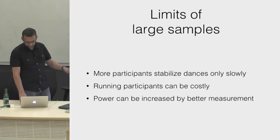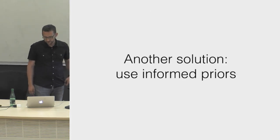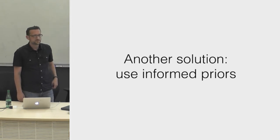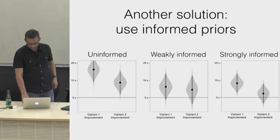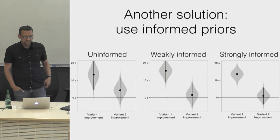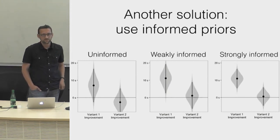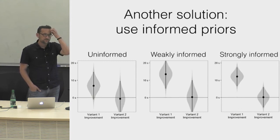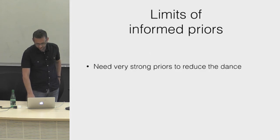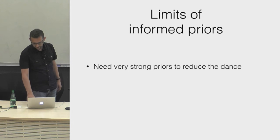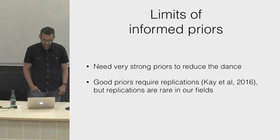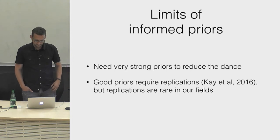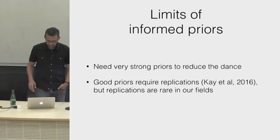Increasing sample size is not the only or most effective way of increasing statistical power — you can also improve measurement. Another solution is using informed priors in Bayesian estimation. With strongly informed priors, the intervals are a bit smaller and bounce around a bit less, but not dramatically so. You need very strong priors to really stabilize the Bayesian dance, and strong priors require replicating an experiment — which requires a previous experiment to inform them — and replications are rare in HCI.